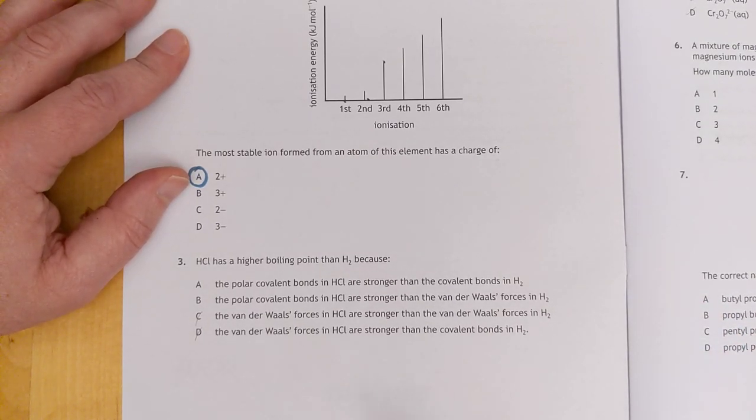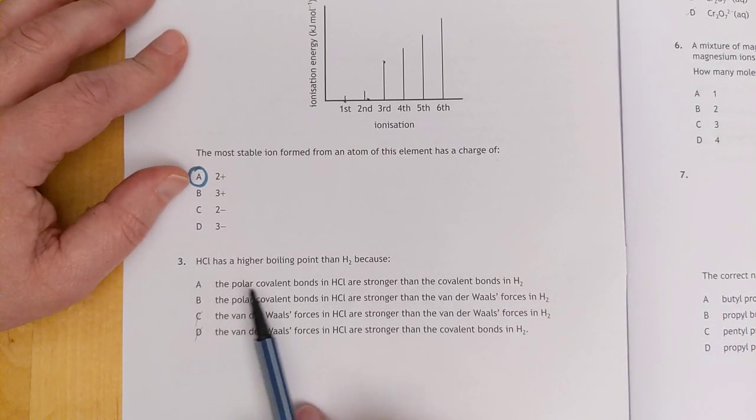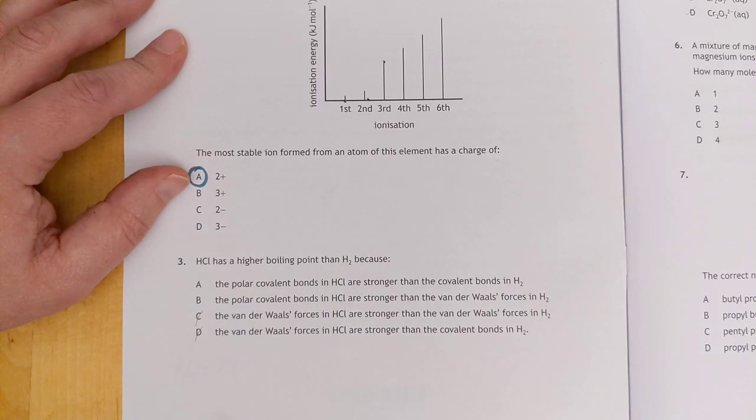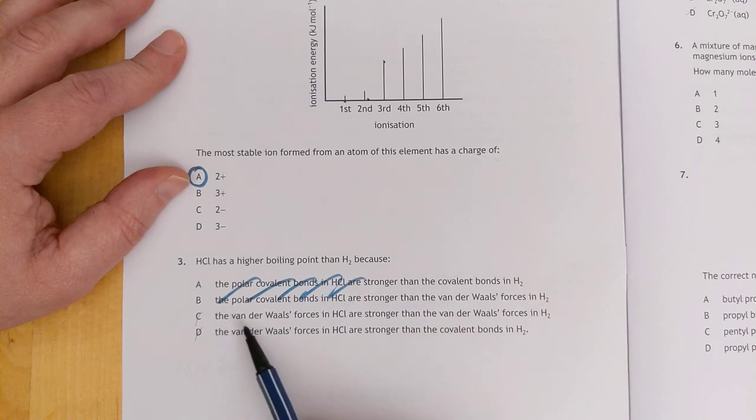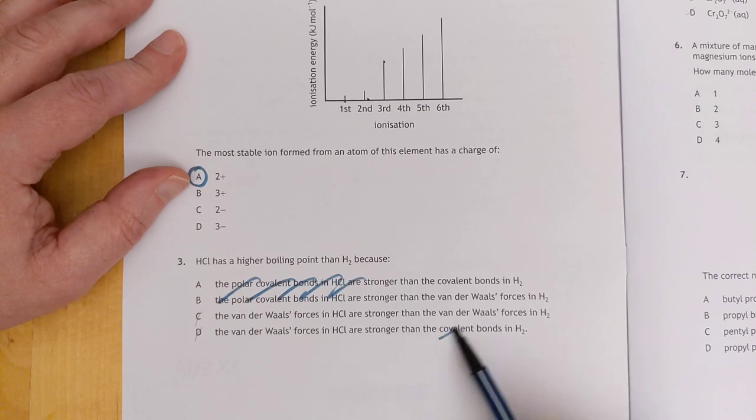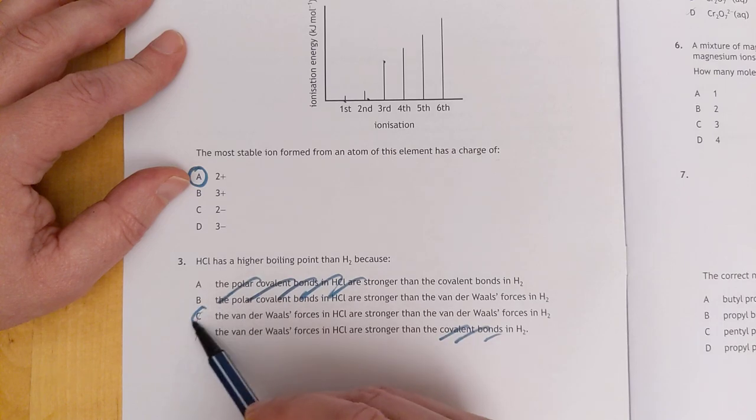Sorry, I've zoomed in so you can see the questions, but it means I have to move it around. Hydrochloric acid has a higher boiling point than hydrogen because... Well, HCl is polar, hydrogen is non-polar. The polar covalent bonds are stronger? You're not breaking the covalent bonds. The van der Waals forces in HCl are stronger. Yeah, that sounds right. They mentioned covalent bonds again. No, you're not breaking bonds. C.